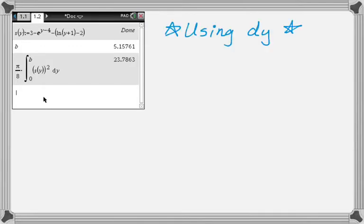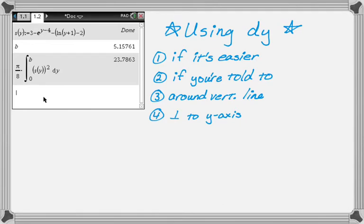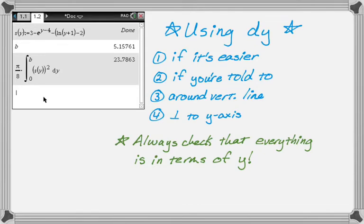To summarize when to use dy: it might just be easier, in which case definitely do it; you might be told you have to; you're rotating around a vertical line; or you're dealing with cross sections perpendicular to the y-axis. At the end of setting it up, always check that everything is in terms of y — bounds and curves — because using x values instead of y values is the number one mistake people make.